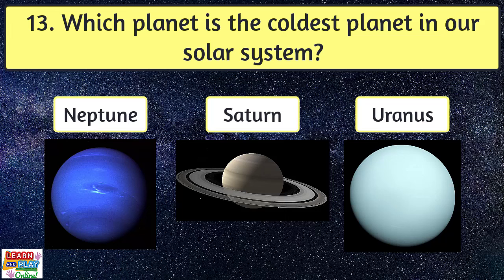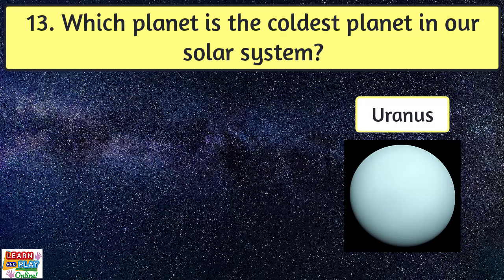Question 13. Which planet is the coldest planet in our solar system? Uranus.